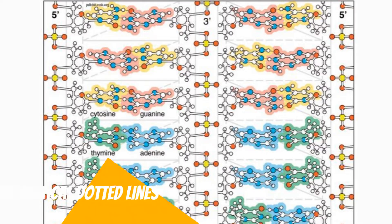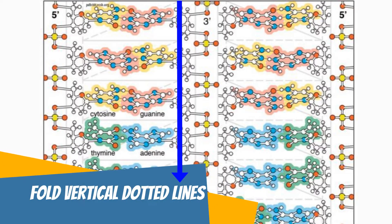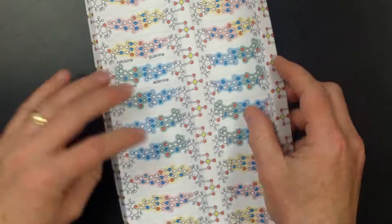Now fold the long, vertical dotted lines. These should be folded so that the dotted lines are hidden inside of the fold.